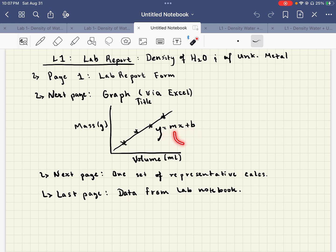And the m value right here is actually your slope, which is rise over run, which will tell you what the density of water should be. So that m right there will give you the density of water from your graph.